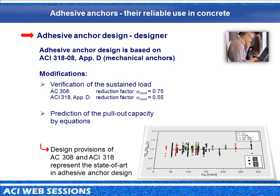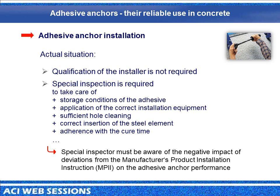Another necessary verification is the prediction of pull-out capacity by equations — something that must be calculated. These design provisions agree very well with test results, as shown in the chart. Once the anchor is designed, it must be installed. The actual situation in the United States is that no qualification of the anchor installer is required. Instead, a special inspection is required, meaning the special inspector must oversee storage conditions of the adhesive, application of the correct installation equipment, and so on — and must be aware of the negative impact of deviations from the manufacturer's product installation instructions.